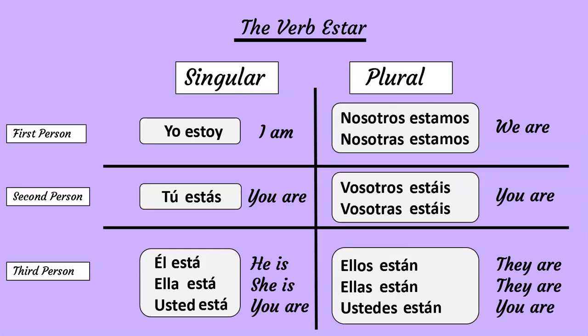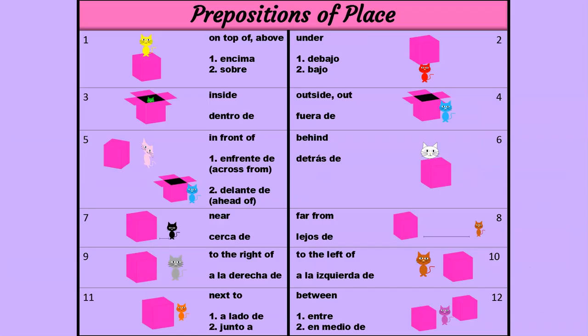The first thing you need to know is the verb estar and all its conjugating forms. You also need to know prepositions of place and how to use them.